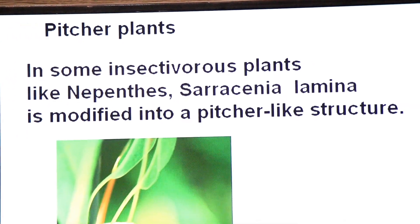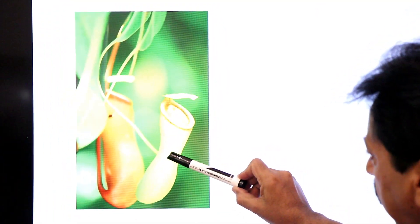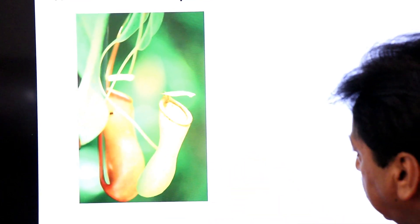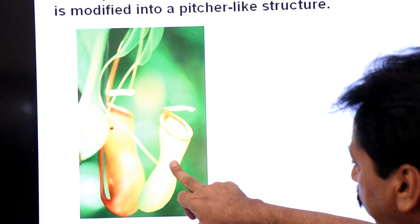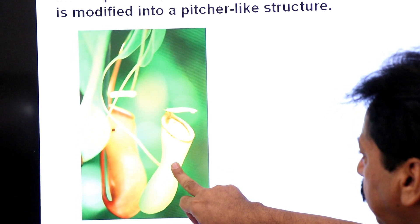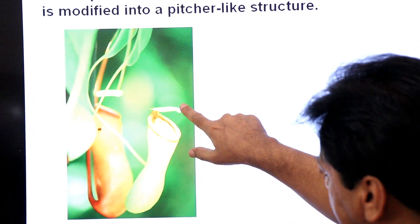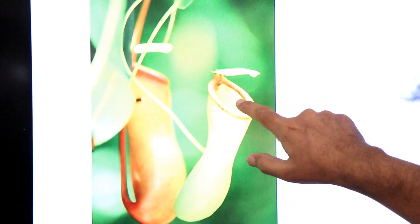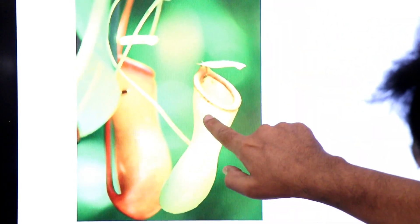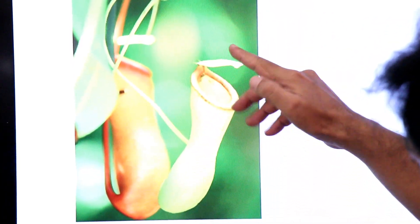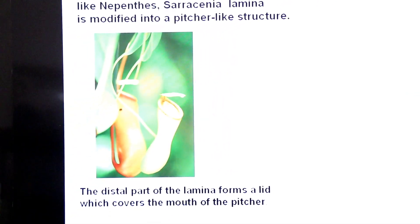This is the modified pitcher-shaped leaf of the pitcher plant. 'Pitcher' means matka in Urdu/Hindi, so the shape is like a matka. This is the mouth of the pitcher, and it has a covering known as a lid. The edges are very slippery, and as soon as insects touch these slippery edges, they fall into the pitcher's cavity, and the lid closes on top.